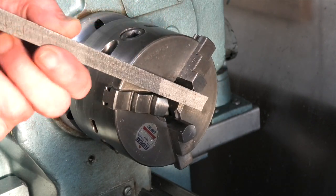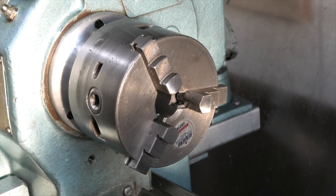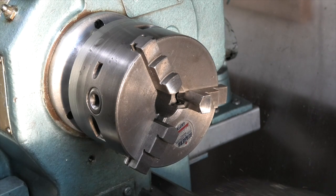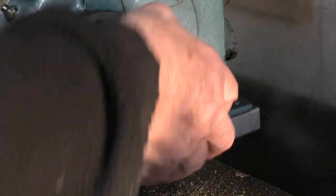Lock the spindle and then just tap the bar and the chuck comes undone. Place a piece of wood on the bed to protect it, then unscrew the chuck.